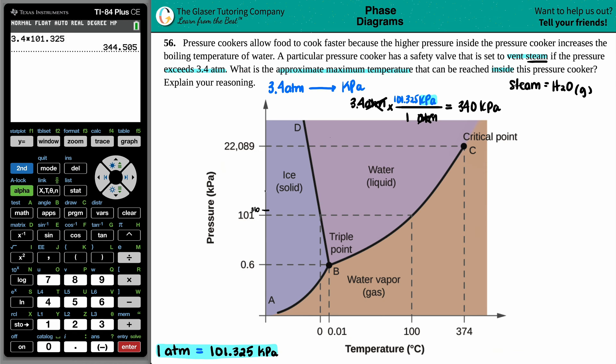Now we need to know what is the maximum temperature that can be reached inside the pressure cooker. Now the safety valve is basically when you're going to vent steam, but that's the highest temperature. You want the highest temperature so that that safety valve doesn't get reached.